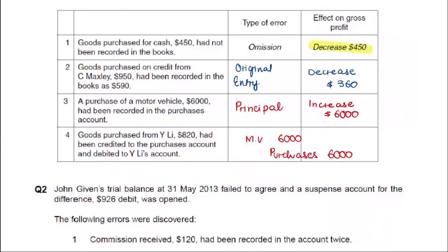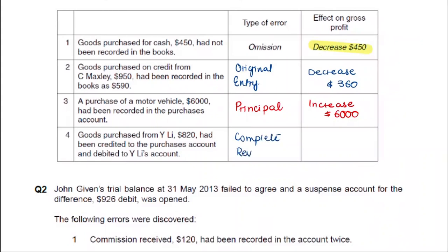We will come to the last one. He said we purchased goods from Wiley — Wiley would be a trade payable. The entry had been credited to the purchases account and debited to Wiley's account. When we purchase, we should debit purchases and credit Wiley, our liability. But the entries were reversed — this is a complete reversal.